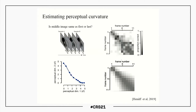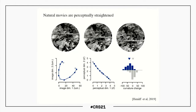We measure pairwise distances between frames: observers see three frames - two of which are the same and one is different - and have to pick the outlier. The pattern of proportion-correct answers gives us a distance metric in their internal representation, which allows us to estimate curvature.